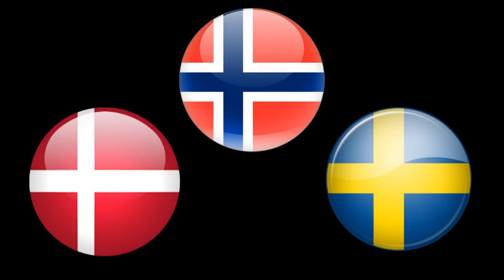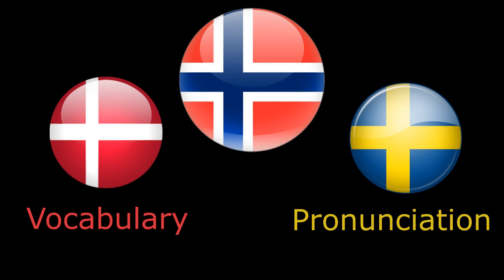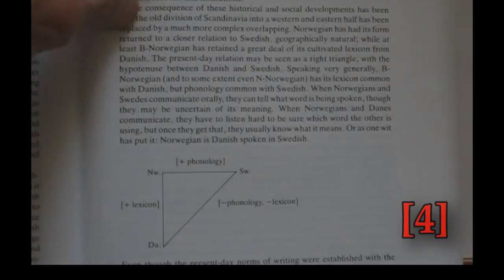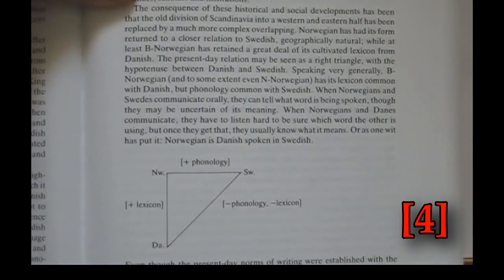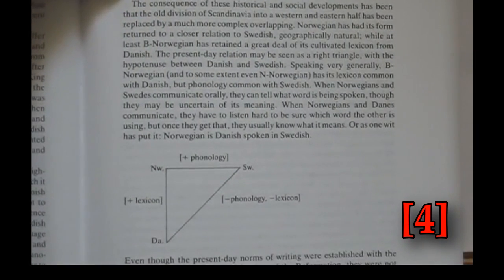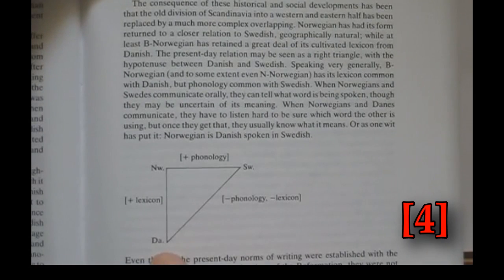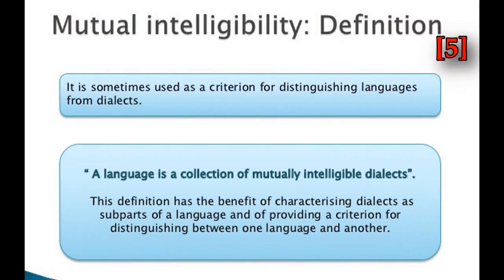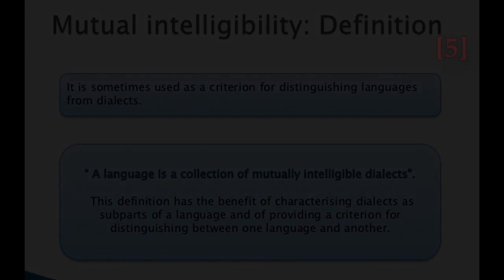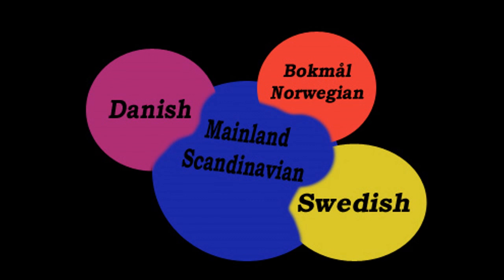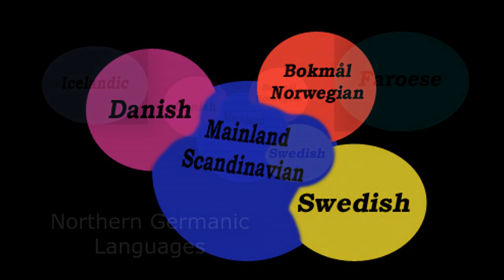These three languages are so similar, probably due to the close history all three countries share, that they say that Norwegian is Danish spoken in Swedish. This brings up a question: if someone speaking Norwegian can understand a good portion of what someone says in Swedish or Danish without necessarily needing formal learning classes, should they really be considered separate and distinct languages, or could they just be far-removed dialects of some common Scandinavian language? Maybe this triforce of the mainland northern Germanic languages are in some sort of gray area, stuck in a transition stage of a common language splitting into distinct languages, while not quite fully so yet.